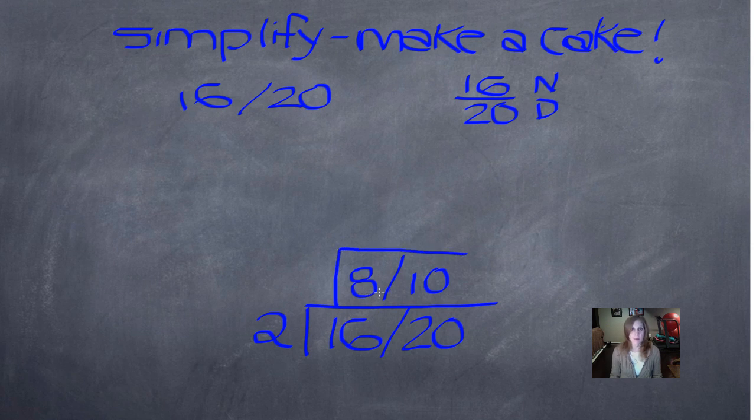What will divide evenly into both 8 and 10? Again, 2. I could have used a different number here on this bottom layer, and that's okay. I'm going to come up with the same answer. 2 goes into 8 four times, fraction bar. 2 goes into 10 five times.